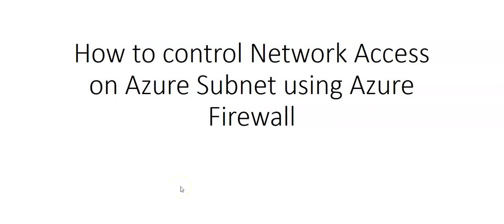Hi, my name is Ashish and in this video we will see how to control network access on an Azure subnet using Azure Firewall. Controlling outbound network access is an important part of the overall network security plan. You may want to limit access to websites or the outbound IP addresses and ports that can be accessed. One way to control outbound network access is to use Azure Firewall.